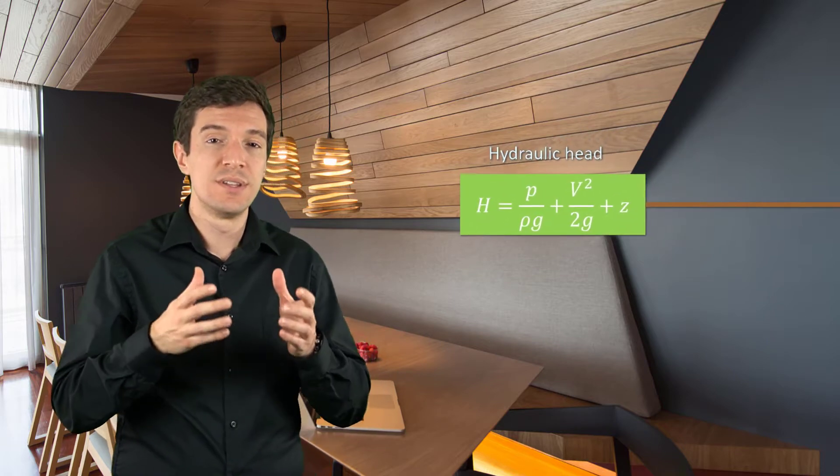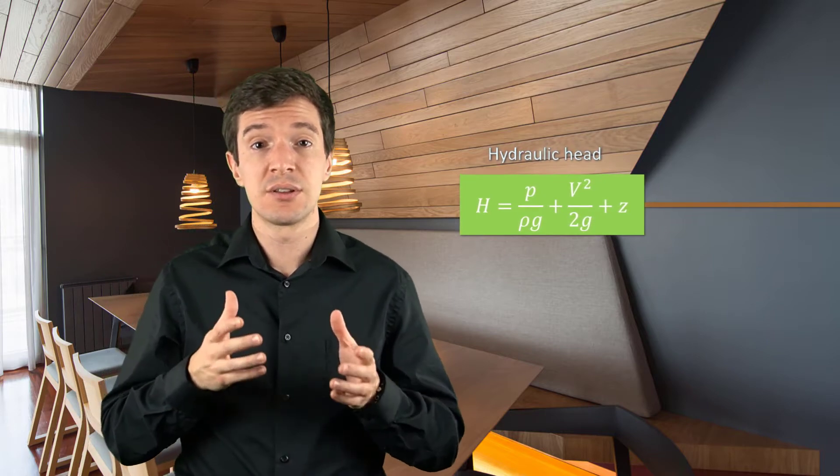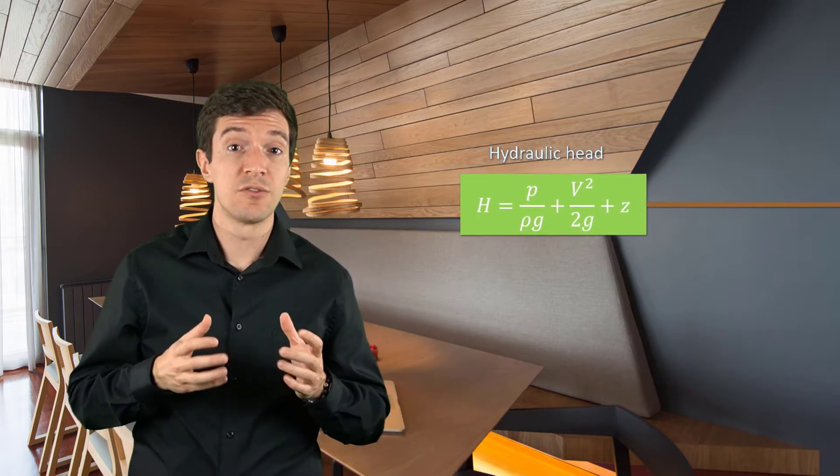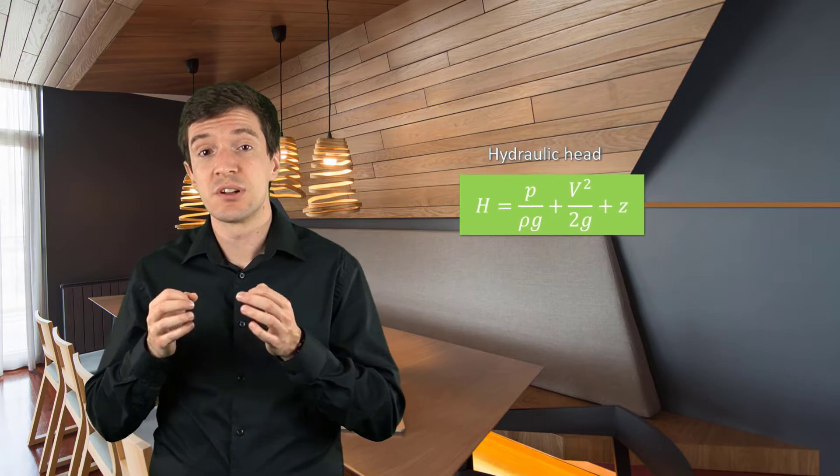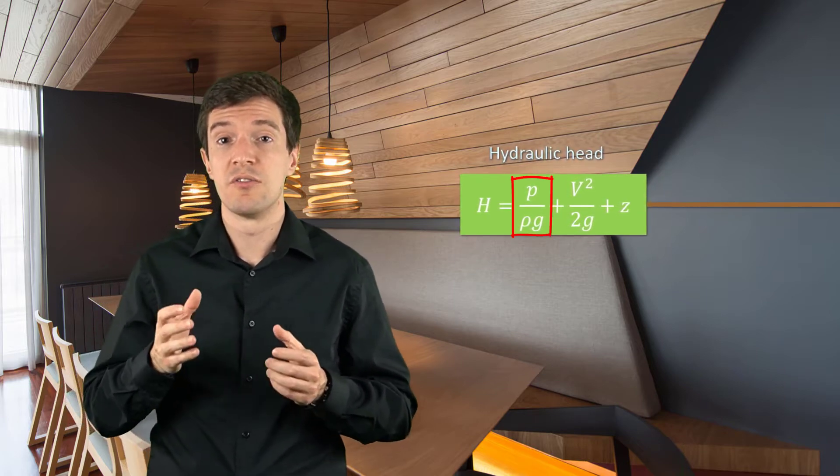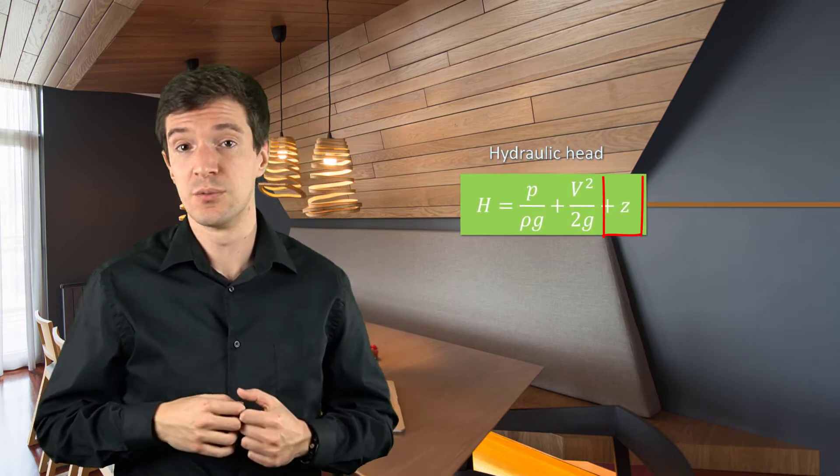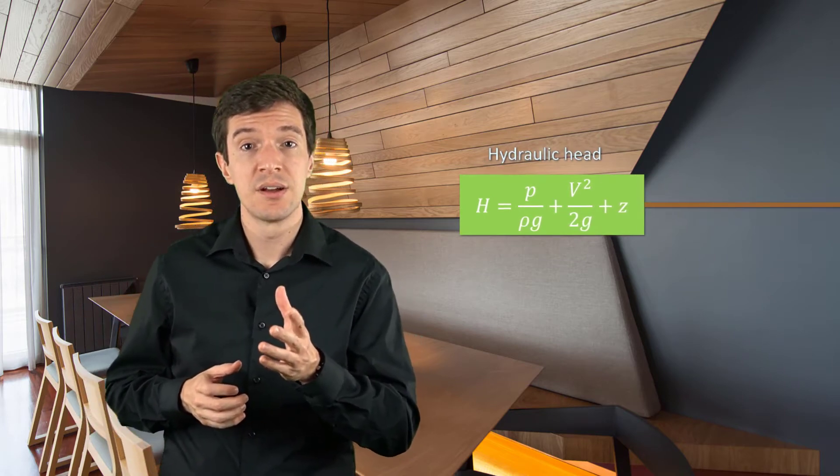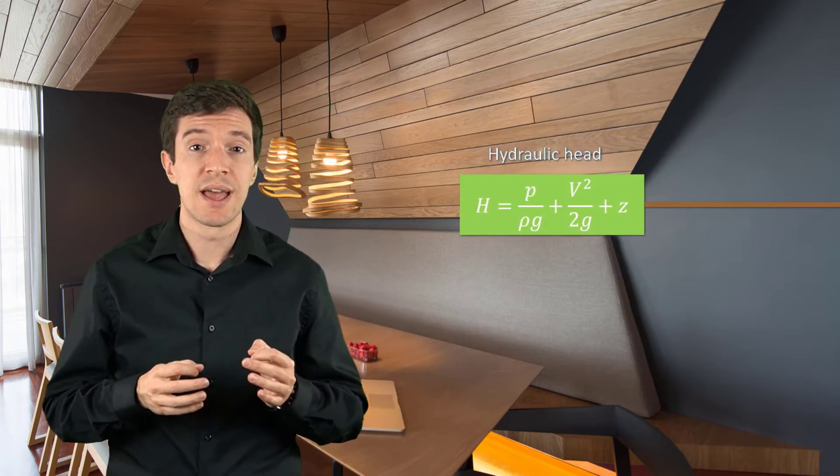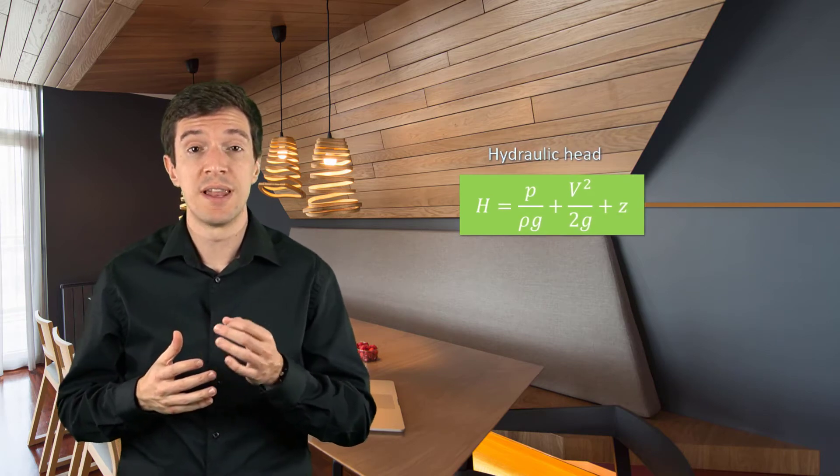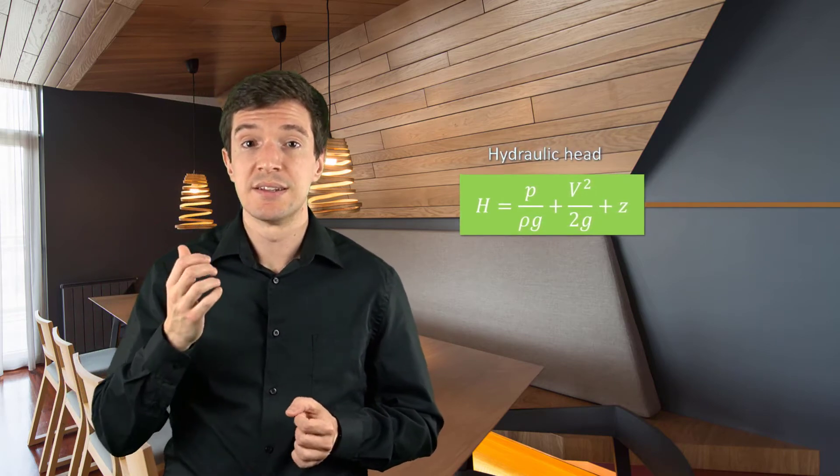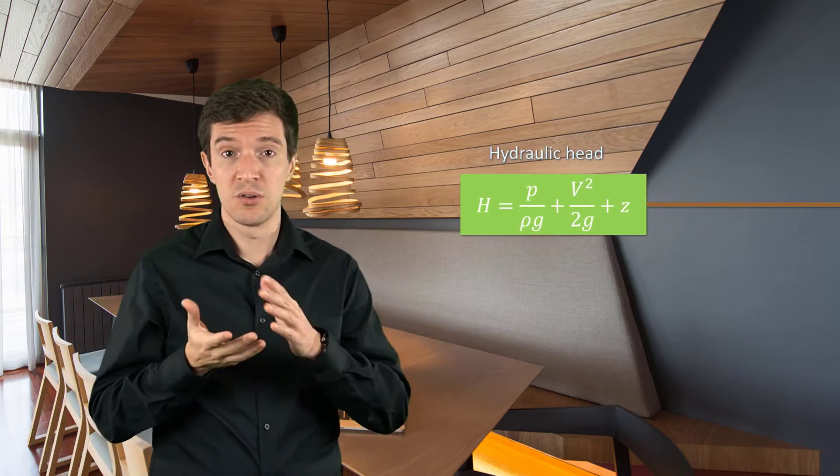Recall that the Bernoulli's equation is a representation of the conservation of energy in a fluid. With this equation we can describe the total energy head for an incompressible flow in a gravitational field, as the sum of a pressure term, the kinetic energy and the local height of the fluid. The hydraulic head represents the flow energy and has units of length, since can be seen as an equivalent height of a static column of fluid.